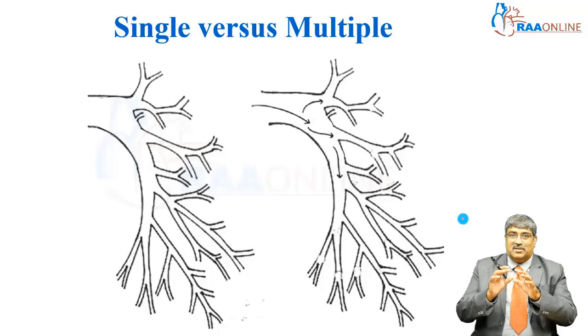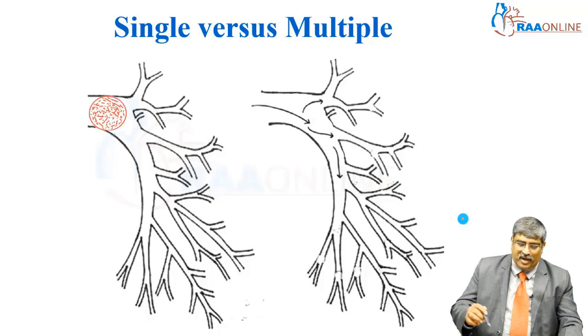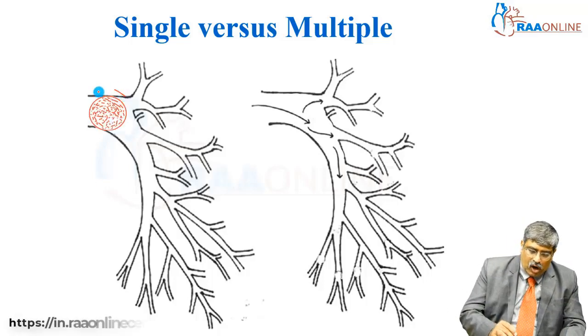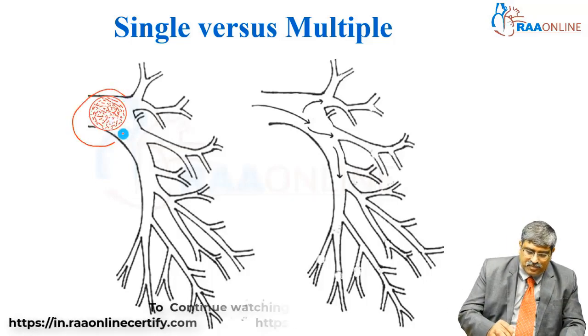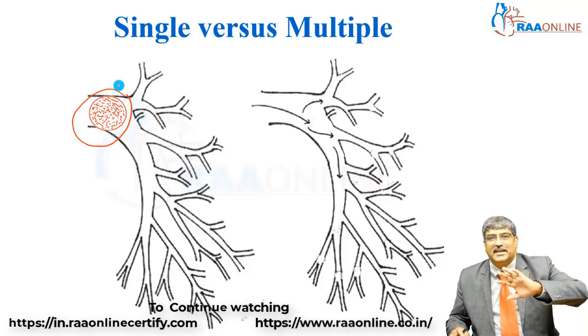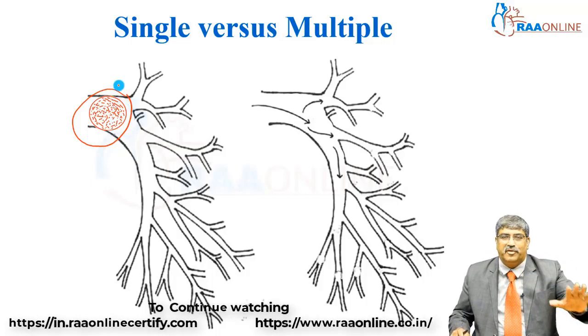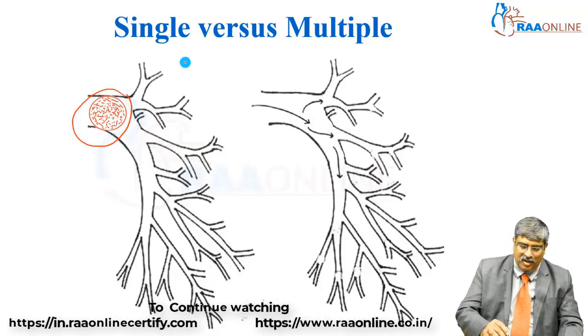Coming to the number of clots: sometimes there might be a large pulmonary embolus obstructing the entire flow of the pulmonary circulation.